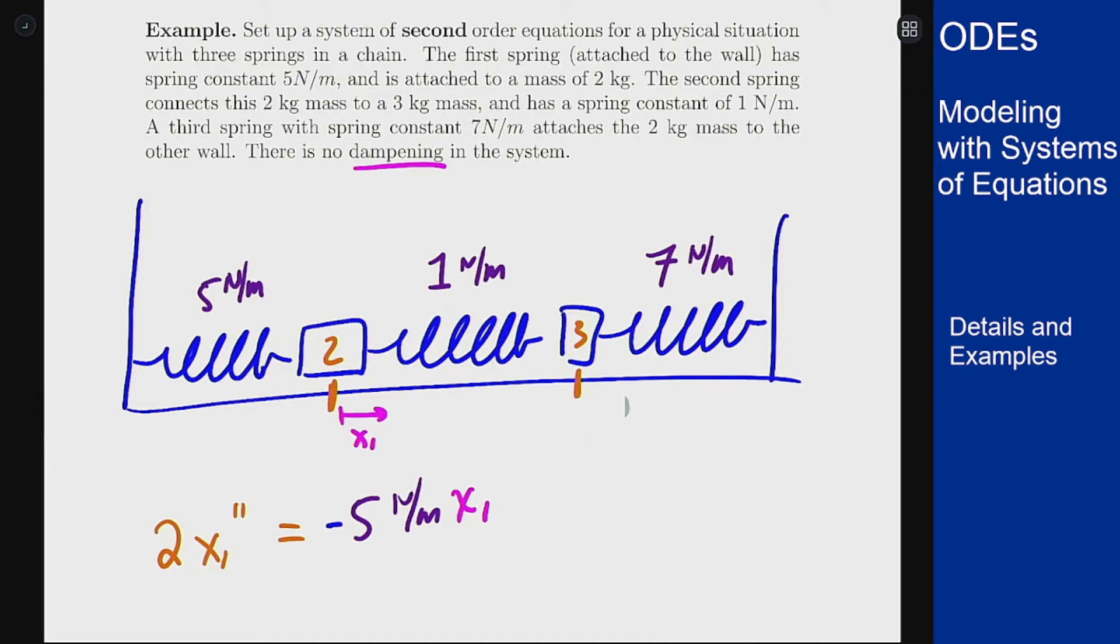Now the second force that acts on it is from the middle spring here, this 1 newton per meter spring. How much does that pull or push on the two kilogram mass? It's going to push on the two kilogram mass based on however much the total distance that it would want to be extended is compressed. How much this is compressed is going to be x1 minus x2, because if I want to squish the middle spring I have to push the first mass to the right and the second mass to the left to squish that spring. If I shift both of them to the right an equal amount, I have not stretched or compressed this middle spring at all, so it's not going to give me any force if the difference between x1 and x2 is the same as it would normally be at zero.